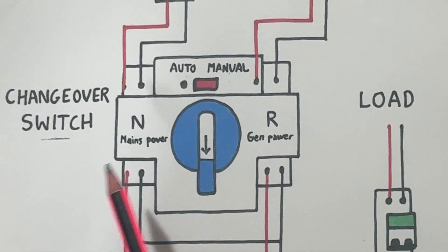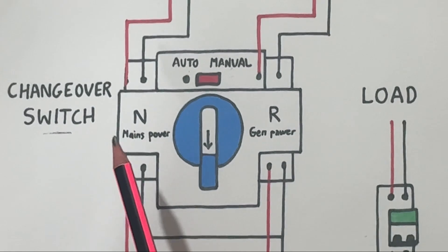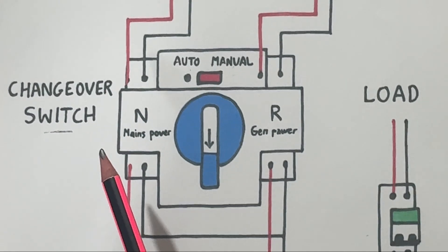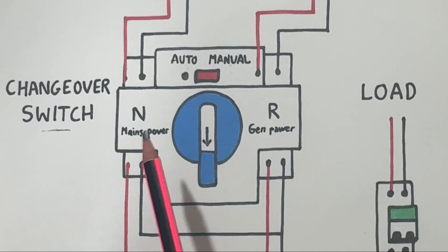When the grid supply comes back, the ATS automatically transfers the load back to the grid and shuts off the generator.